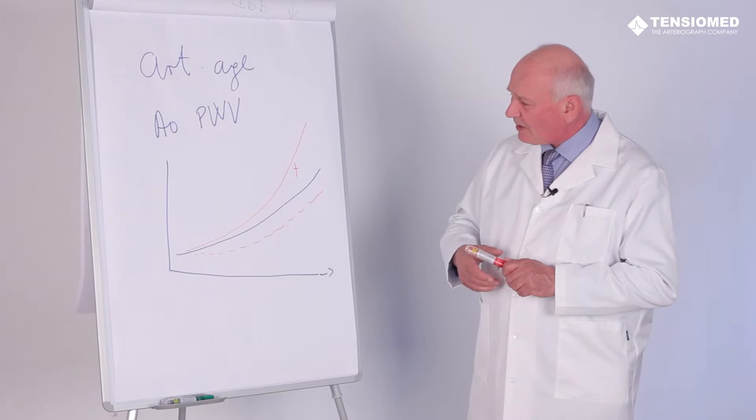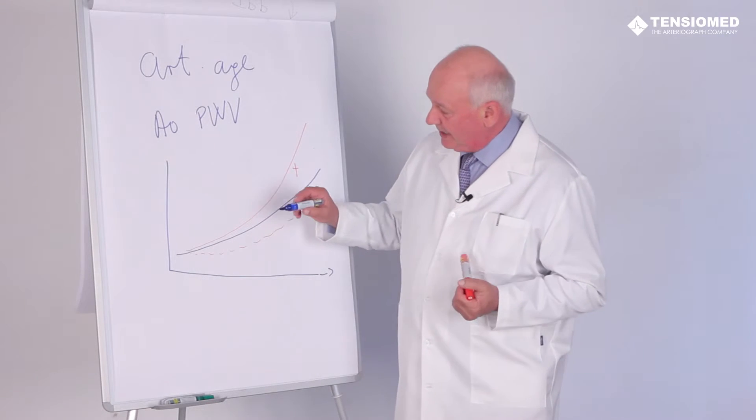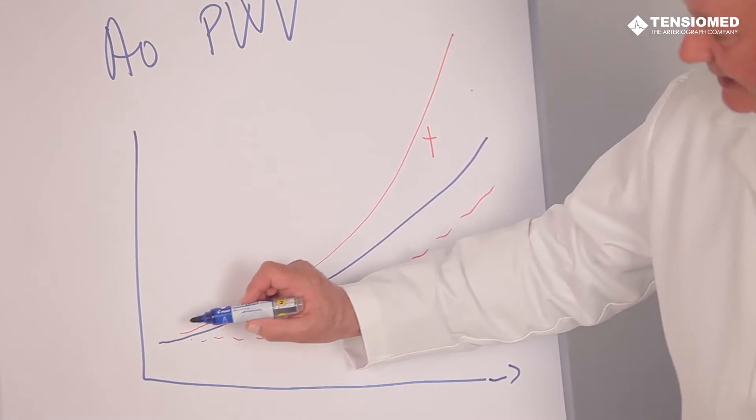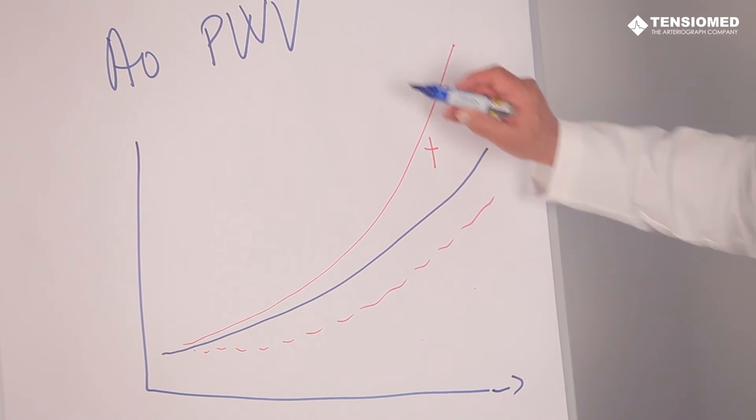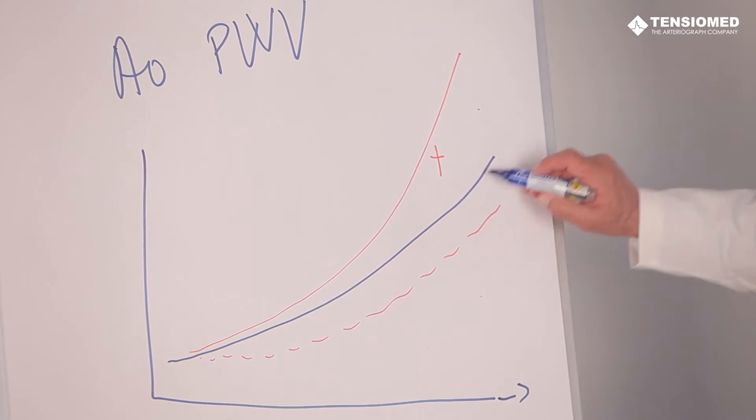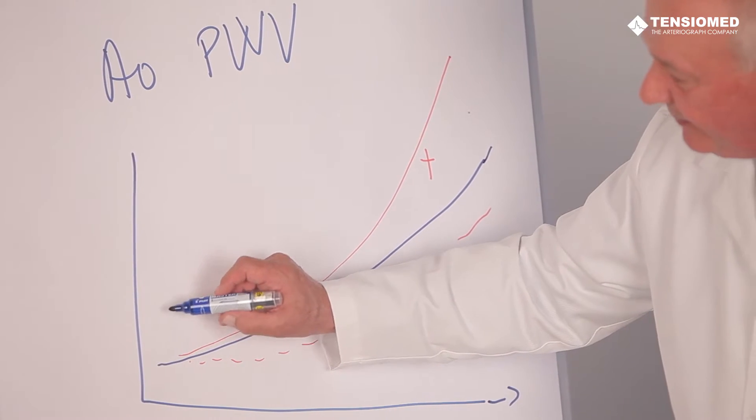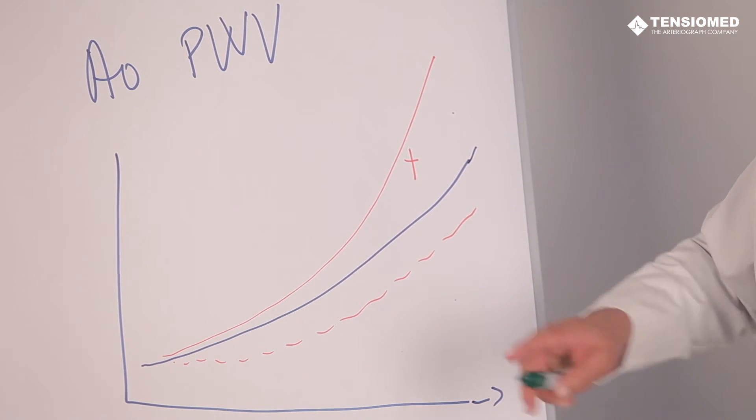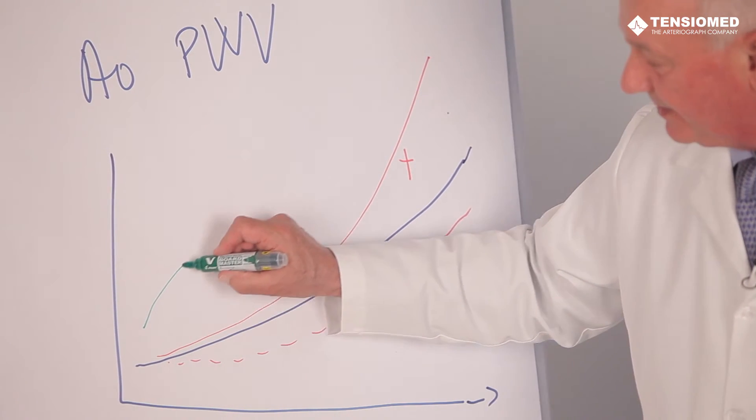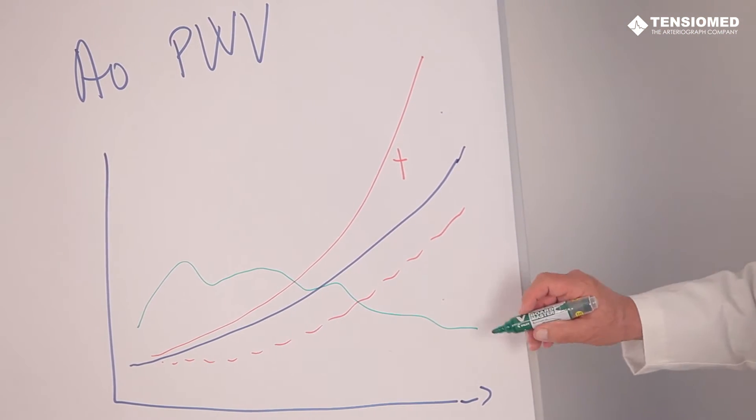Because we know well from work from Stefan Loran and Peter Nilsson that while aortic pulse velocity and arterial stiffness is increasing with age, the different parameters like peripheral blood pressure are fluctuating in our time.